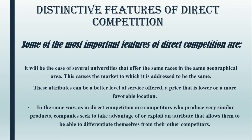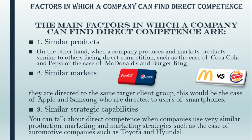The main factors in which a company can find Direct Competition are: Similar products — when a company produces and markets products similar to others, it faces Direct Competition, such as the case of Coca-Cola and Pepsi, or McDonald's and Burger King. Similar markets — competitors are directed at the same target customer group.